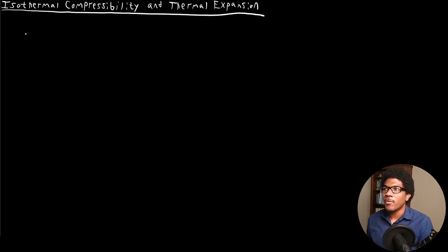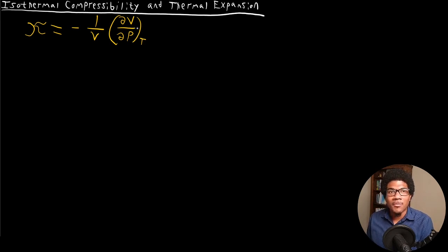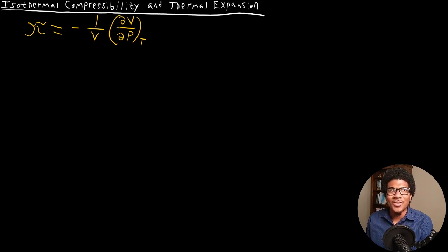Let's start with the isothermal compressibility. We use the Greek letter kappa to denote it — kappa is just a little curly K. Its definition is negative 1 over V times the partial derivative of V with respect to P at constant T. This means the fractional change in volume that accompanies a change in pressure. The negative sign is there because if you raise the pressure, you actually get a drop in volume — they're inversely proportional. So the negative sign offsets that negative change in volume to give you a positive isothermal compressibility.